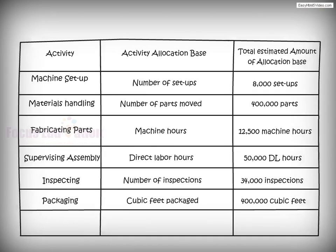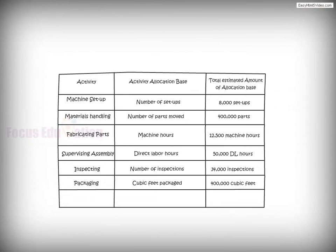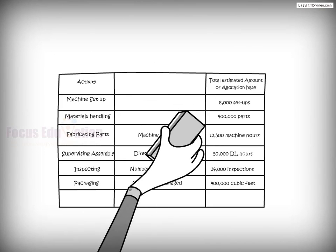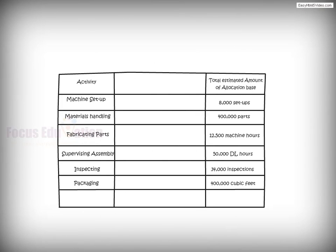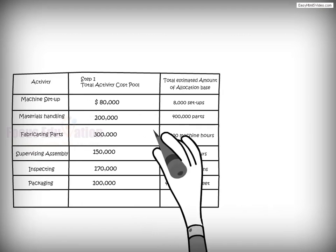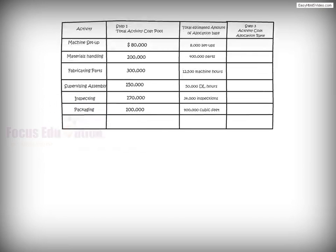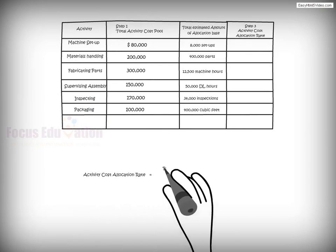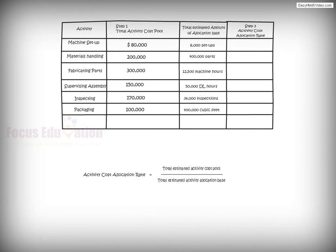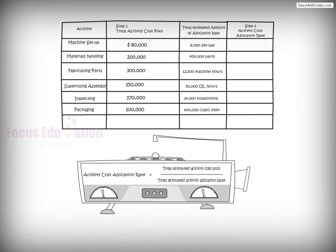After selecting an allocation base for each activity, the company calculates its activity cost allocation rates for each activity as the third step. They do so with the help of a formula, which divides the total estimated activity cost pool by the total estimated activity allocation base.